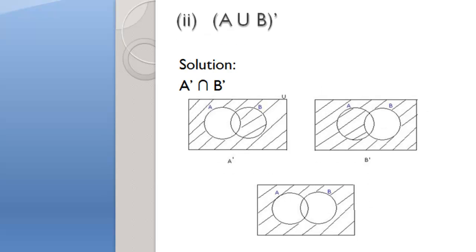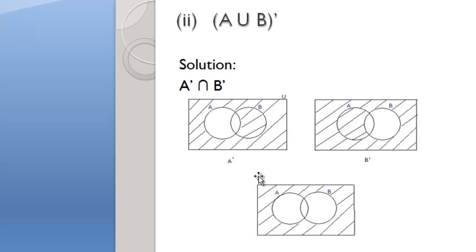Part 2 asks us to identify the set notation that is similar to A union B complement. The answer is A complement intersect B complement. Let's prove it. A complement is everything outside of set A. B complement is everything outside of set B. The intersect of these two Venn diagrams is the portion common to both. The only portion in both diagrams is the region outside of both sets. Therefore, A complement intersect B complement is similar to A union B complement — everything outside of the sets A and B.